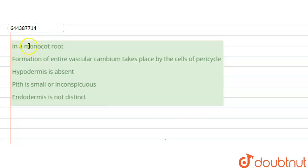In a monocot root, the options are: formation of entire vascular cambium takes place by the cells of pericycle, hypodermis is absent, pith is small or inconspicuous, endodermis is not distinct. So in the first statement, it says the vascular cambium formation takes place by the cells of pericycle.